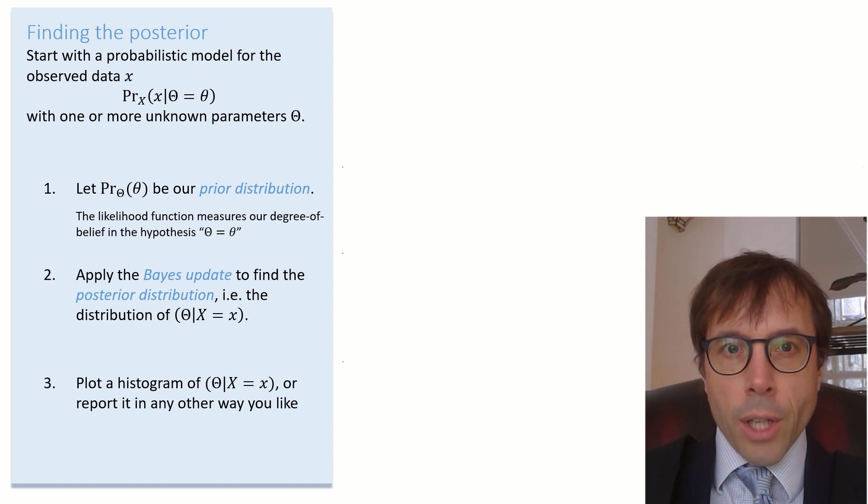For Bayes' calculations, we need to write this probability model out as a likelihood function, the likelihood for big X at seeing value little x. And suppose our probability model has an unknown parameter, call it theta. The Bayesian philosophy is that any unknown should be represented by a random variable. So I'm writing out our probability model as the likelihood of x conditional on the unknown parameter big theta having value little theta.